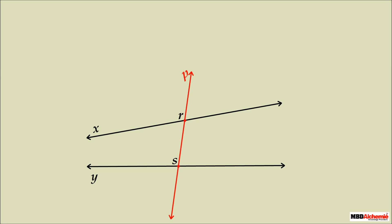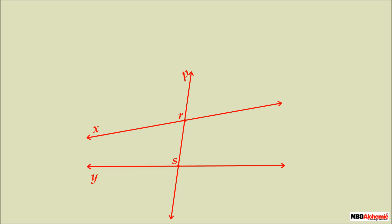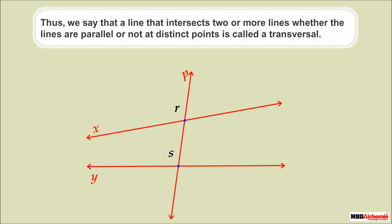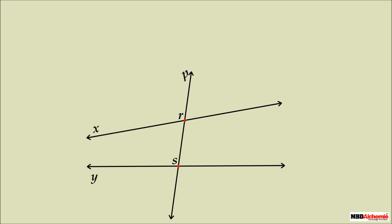If line p intersects two non-parallel lines x and y at two distinct points R and S, would it still be a transversal? Yes. It is not important whether the lines are parallel or non-parallel. A line that intersects two or more lines at distinct points — whether parallel or not — is called a transversal.